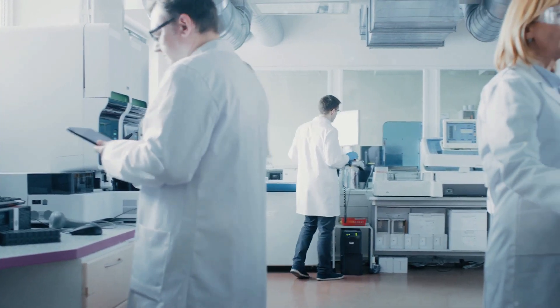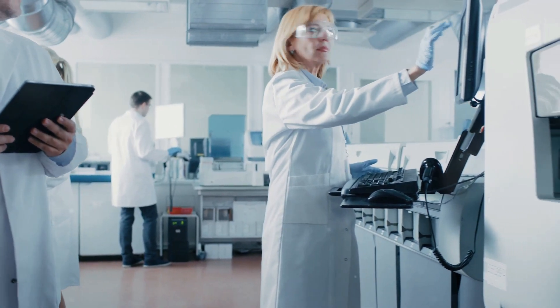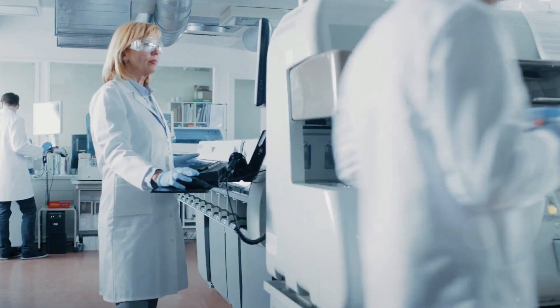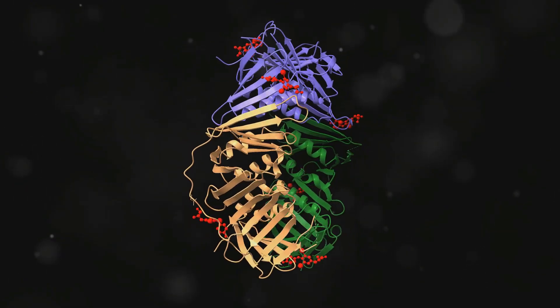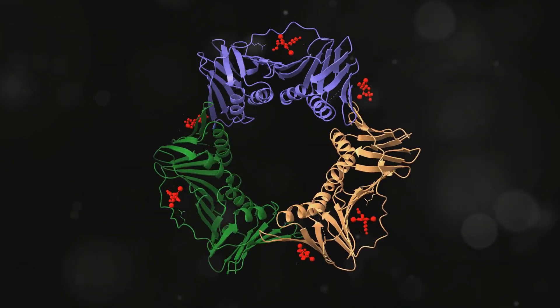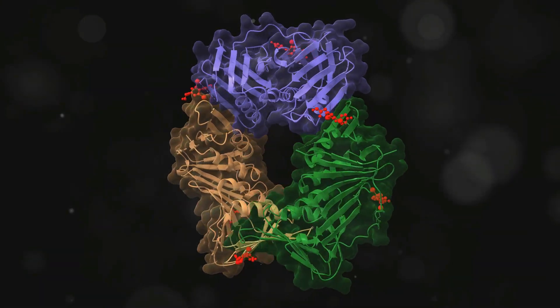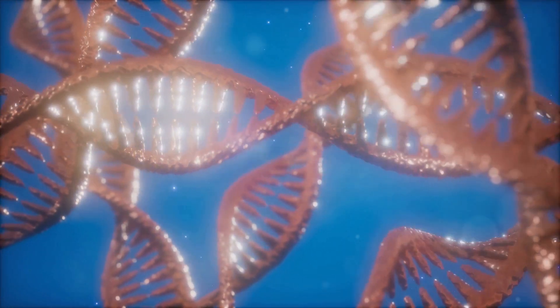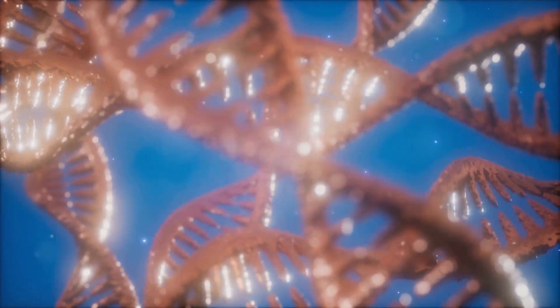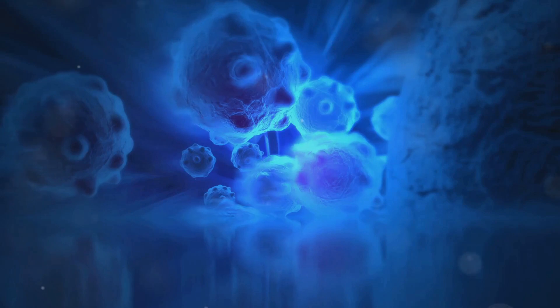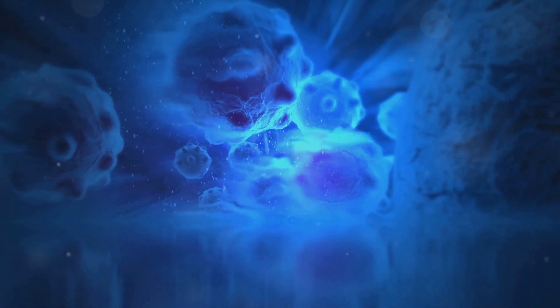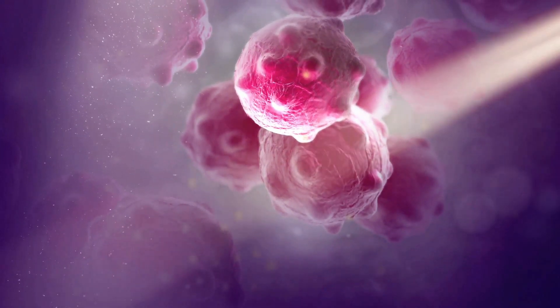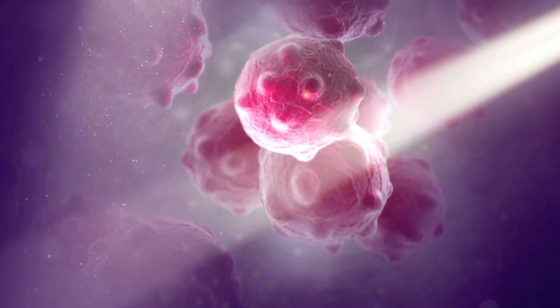AOH-1996's efficacy stems from its unique mechanism of action, which sets it apart from traditional chemotherapies and targeted therapies. Unlike conventional treatments that induce DNA damage leading to cell death, AOH-1996 directly inhibits the function of PCNA, a protein crucial for DNA replication and repair in all proliferating cells. This targeted approach selectively eliminates cancer cells while sparing healthy cells, minimizing off-target effects and reducing the likelihood of debilitating side effects.